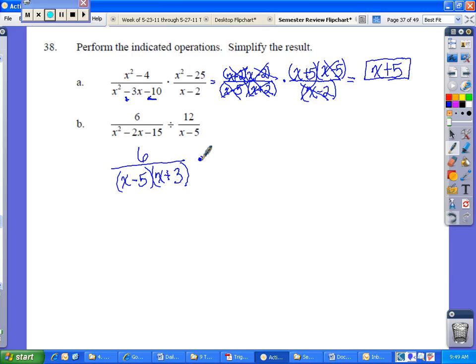The division, I'm going to change to multiplication and flip the second, just like I would divide two fractions. And now I can cross-cancel. So x minus 5, x minus 5. The x plus 3 has nothing to cancel with, so I know that's going to be on the bottom over here.